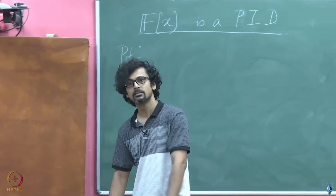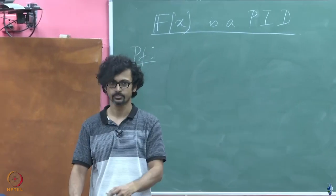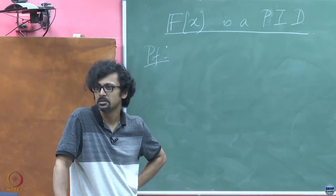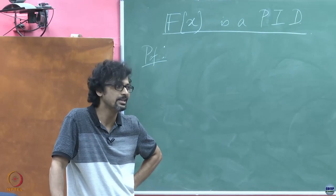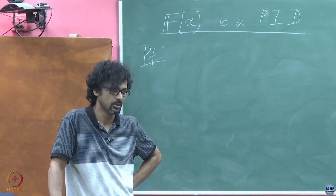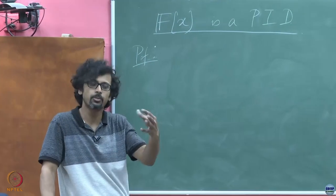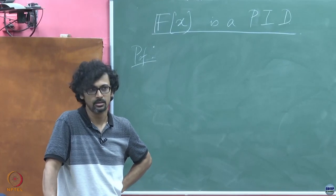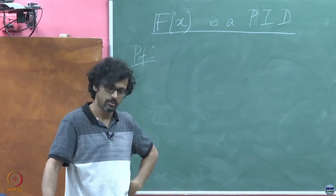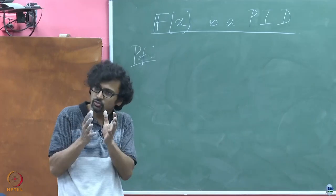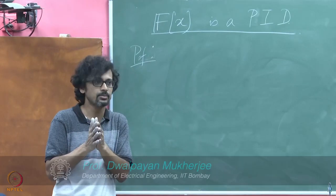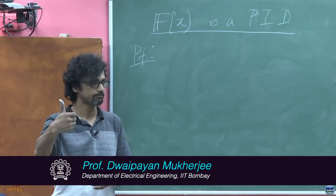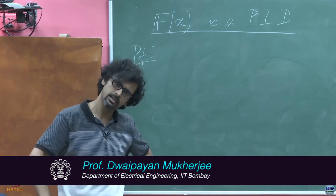Suppose I give you a subset. This subset is not any arbitrary subset — it is already an ideal. What is that property of an ideal that is so interesting? And how can we harness it to narrow it down to just one polynomial? If I told you this one polynomial, you can go ahead and generate this entire ideal.